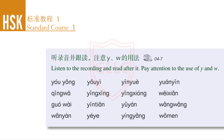听录音并跟读，注意 一 和 乌 的用法。 Listen to the recording and read after it. Pay attention to the use of 依 and 乌: 游泳、有意、音乐、原因、青蛙、影星、英雄、危险、国外、阴天、语言、往往。